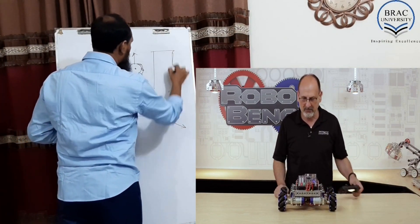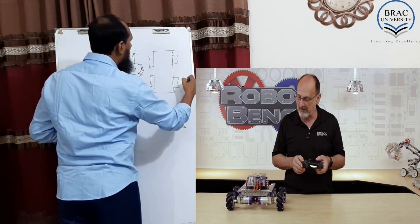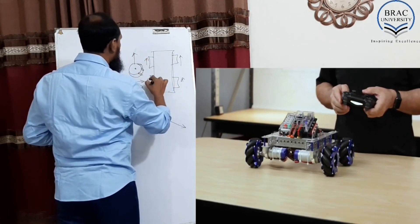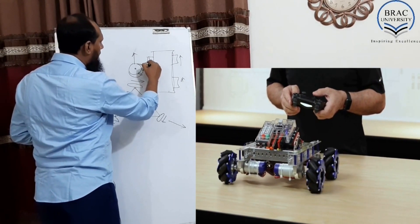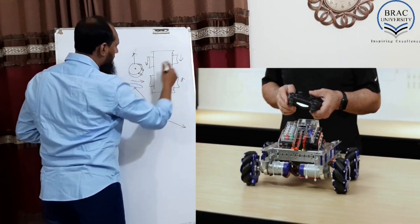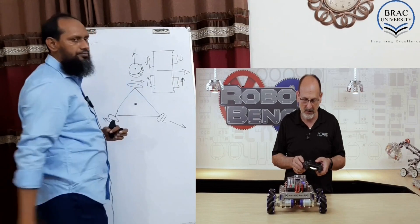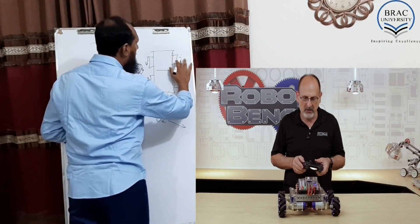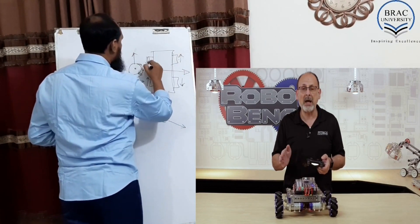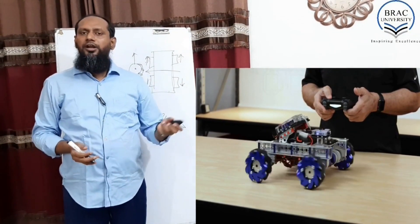The mecanum wheel is another mechanism wheel. If all wheels spin the same way, the robot goes forward. If two spin one way and two spin the other way, it moves sideways. Reversing that pattern moves it in the opposite lateral direction. These directional movement capabilities make mecanum wheels very useful.